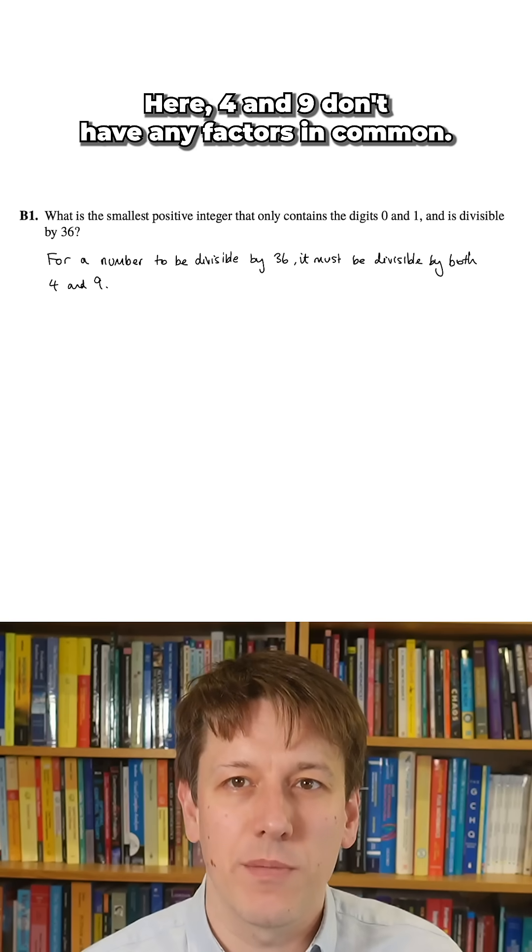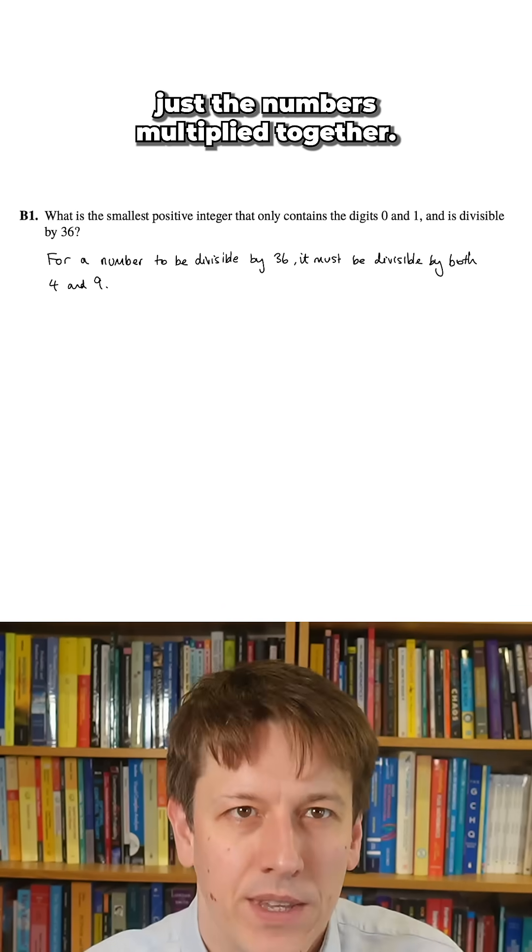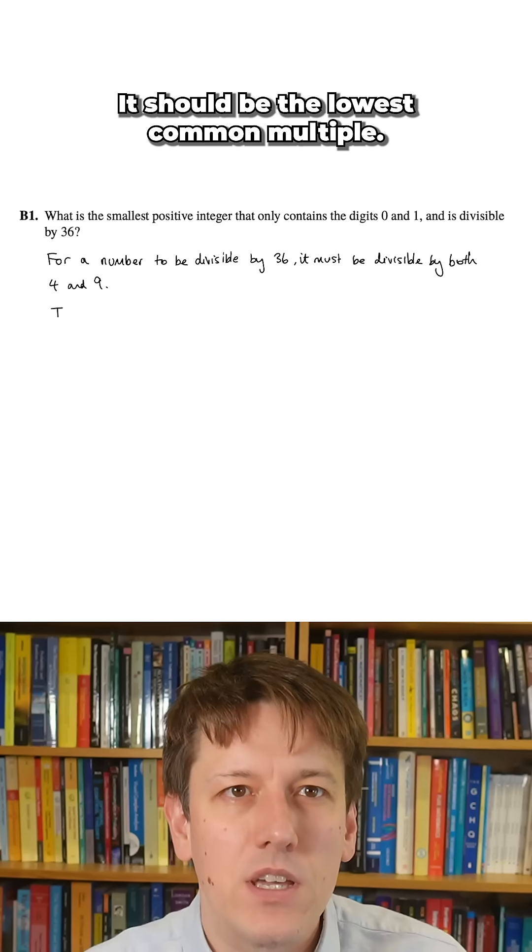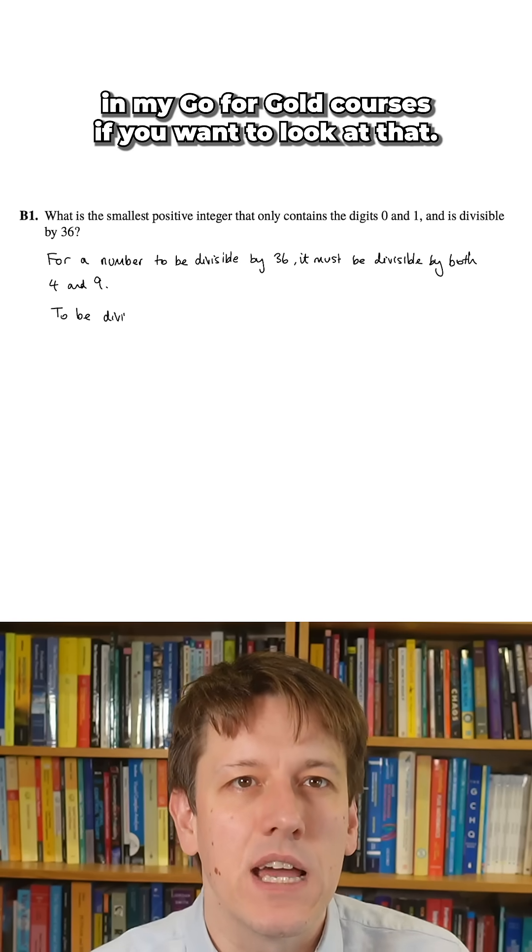Here, 4 and 9 don't have any factors in common, so it's the same thing as 4 times 9, but it's not always just the numbers multiplied together - it should be the lowest common multiple. Much more detail about that in my Go4Gold courses if you want to look at that, but let's get on with this question.